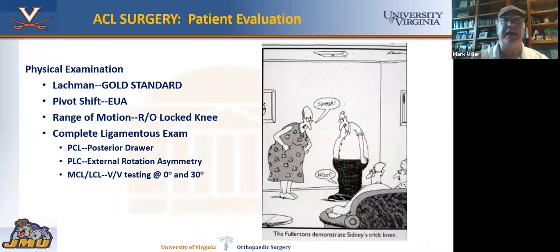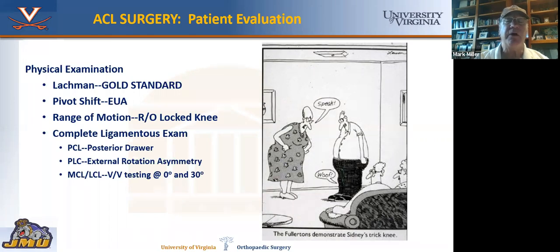Moving on to examination, the Lachman is the gold standard. It's done at 20 or 30 degrees of knee flexion. You simply stabilize the femur and pull forward on the tibia. I like to put a pillow under the knee because it really helps you get the patient to relax. A pivot shift is also very helpful and really calls out the importance of the rotatory function of the ACL. It's best elicited on exam under anesthesia. It's also important to look for range of motion — we want to make sure the patient has full extension, otherwise you can have a locked knee. We'll often send people to the therapists to help get motion before surgery. That's what we call prehab, and it's critical that patients have knee motion before surgery because if they go in with loss of extension, they may never get it back again.